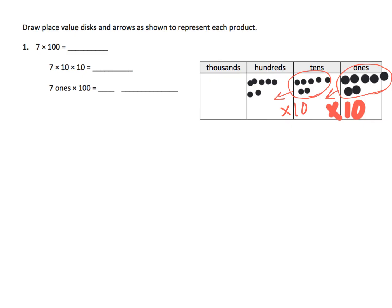The idea is when you multiply by ten and ten, you take your group, move it over one column for the first times by ten, and move them over again for the second times by ten. We end up with seven hundreds. So seven times a hundred is seven hundred, seven times ten times ten is seven hundred, and seven ones times a hundred gives us seven hundreds.